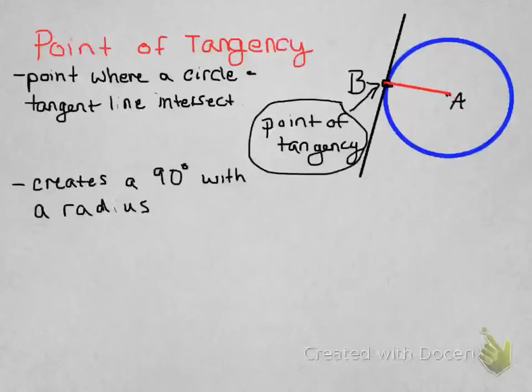So if I draw a line from the point of tangency to A, this has to be a 90-degree angle. So that's your main concept that we're going to be doing in this video.